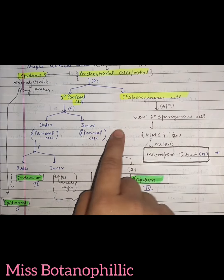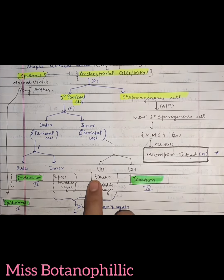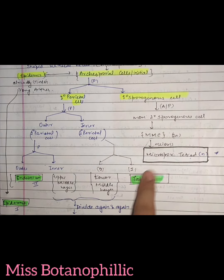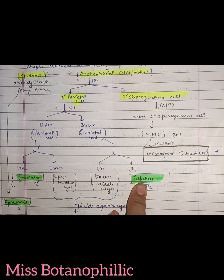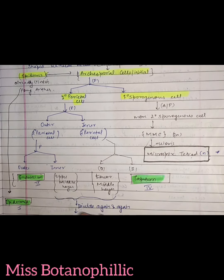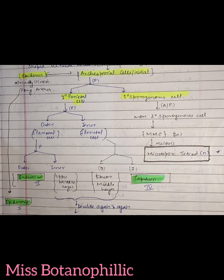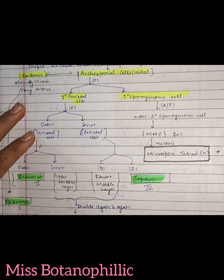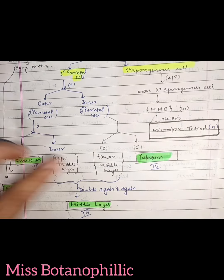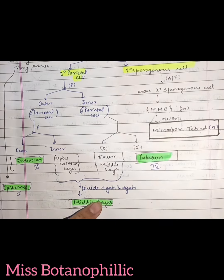The inner secondary parietal cell also undergoes periclinal division, with the outer side forming the middle layer and the inner side forming the tapetum. So we will have four layers in total: the epidermis which was present before, the endothecium created from the outer secondary parietal cell, the tapetum created from the inner secondary parietal cell, and the middle layer formed from the combination of the upper and lower middle layer divisions.